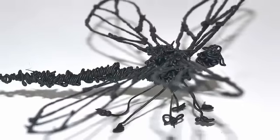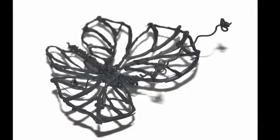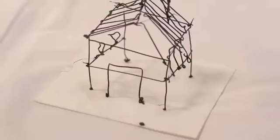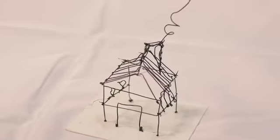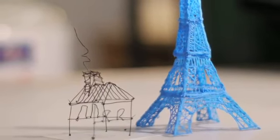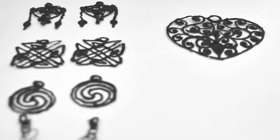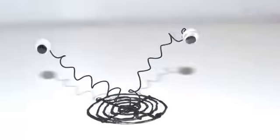So how does it work? 3Doodler uses cutting-edge, patent-pending technology to heat and cool plastic as it passes through the body of the pen. Just like a 3D printer, the plastic cools rapidly and becomes hard.